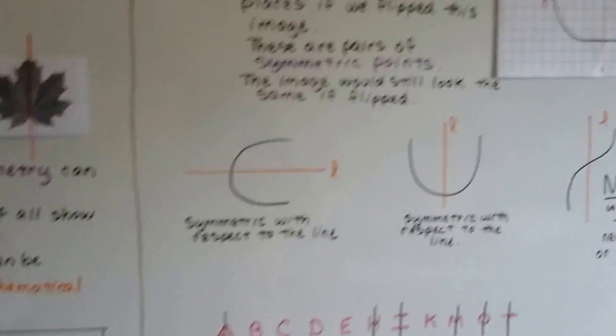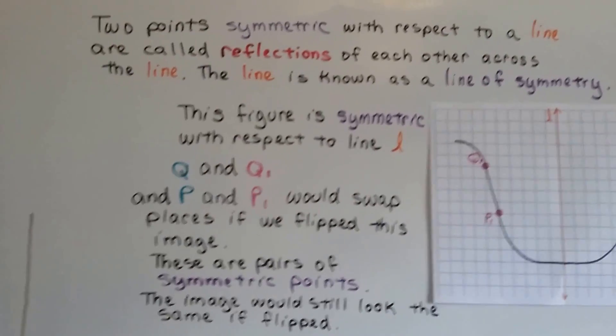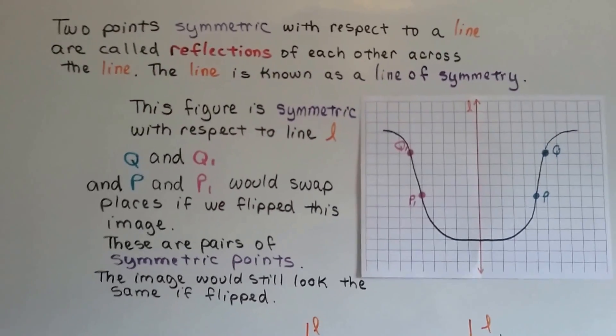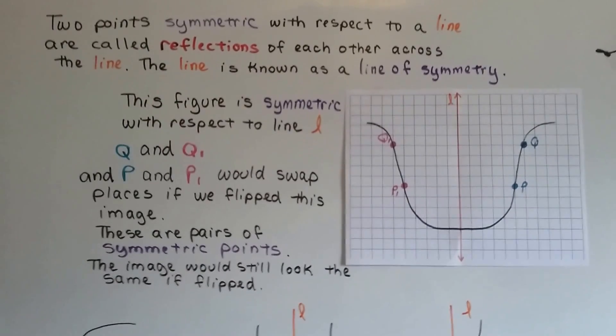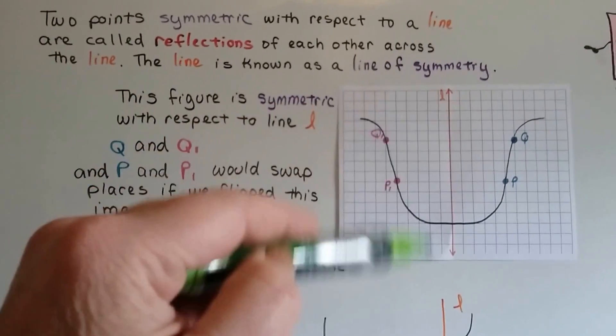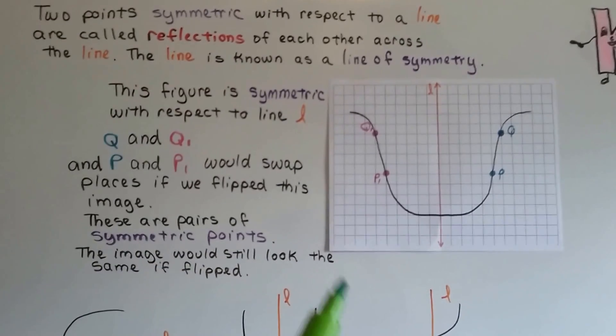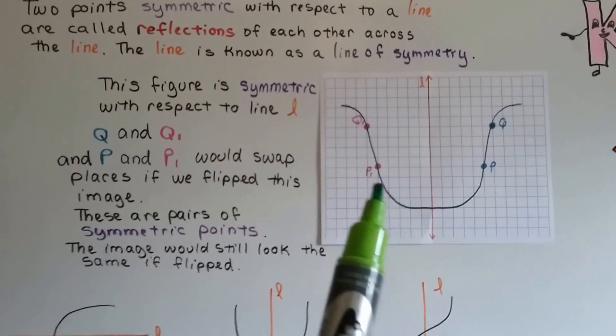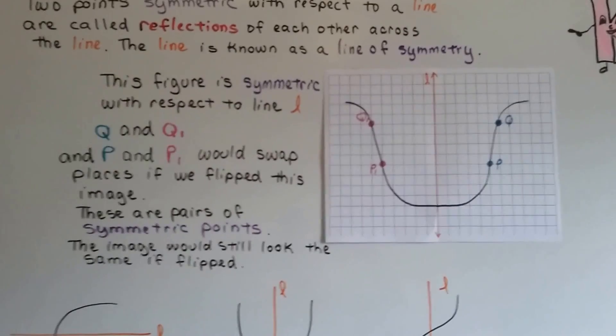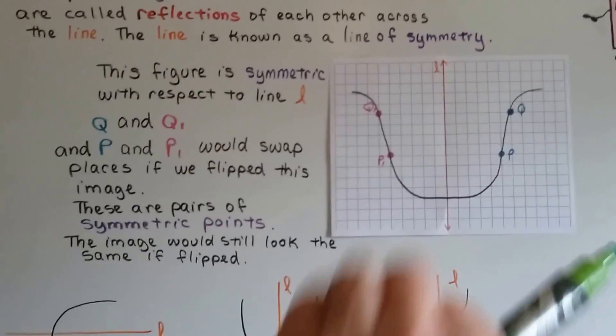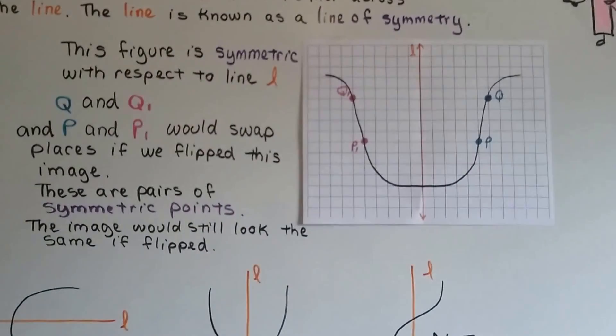Let's take a look at this. Two points symmetric with respect to a line are called reflections of each other across the line. The line is known as a line of symmetry. And this figure is symmetric with respect to line L. We've got a vertical line L. We've got q and q sub 1, and we've got p and p sub 1. And this q and q sub 1 and p and p sub 1 would swap places if we flipped this image completely over.